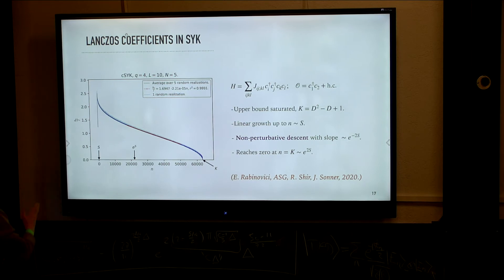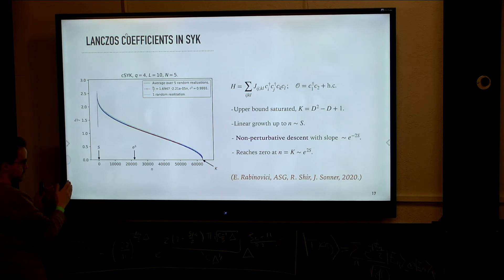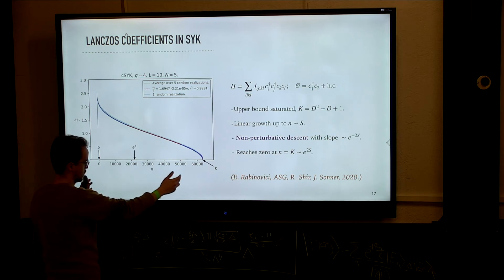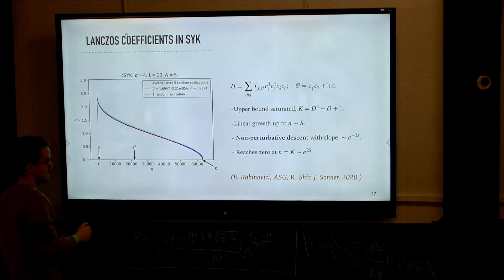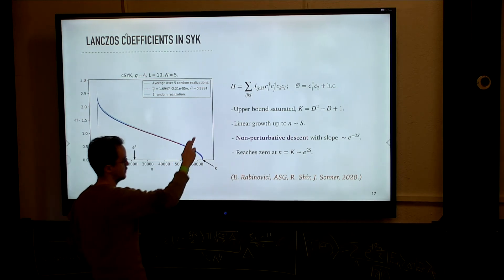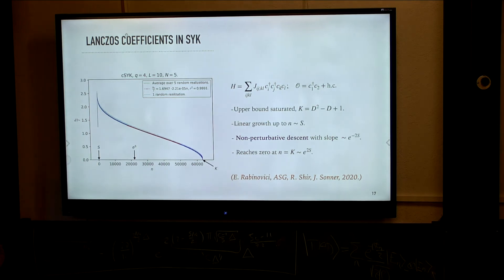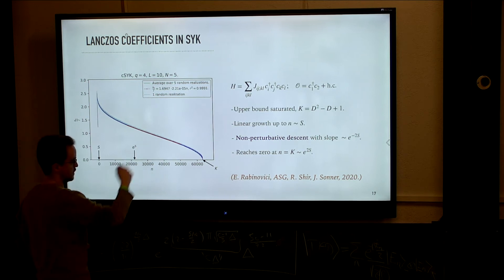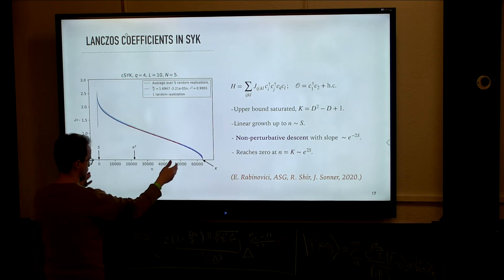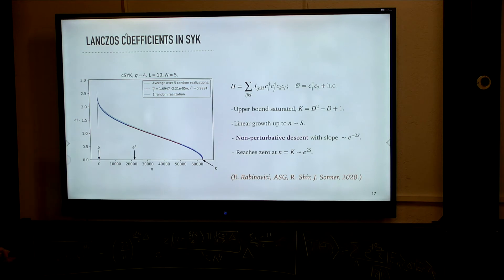We do observe a certain initial growth, and we do observe that the size of the Lanczos sequence is actually exponential in system size — in fact, it saturates the upper bound. This is because it's a maximally chaotic system featuring level repulsion, no exact degeneracies, and the operator we took is dense in the energy basis. So the Krylov dimension is maximal, and we could see this by obtaining a maximal length of the Lanczos sequence.